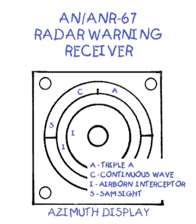A represents AAA. C represents a continuous wave type radar. I represents an airborne interceptor, such as fighters or helicopters. And an S represents ground-based radar associated with SAM site type search and track radar.